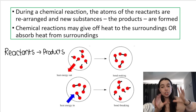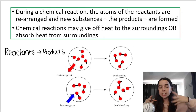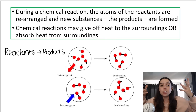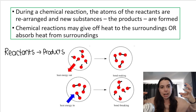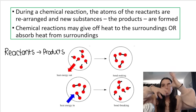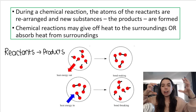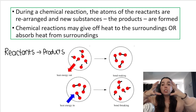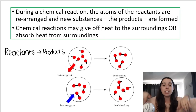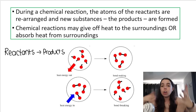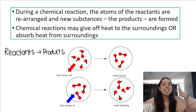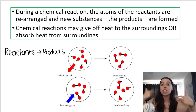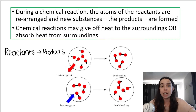Energy is absorbed initially in the reaction — it's called activation energy — in order to break the bonds of the reactants. The atoms rearrange and new products are formed, new bonds are formed, and energy is released. So there are these energy changes and heat changes during chemical reactions.